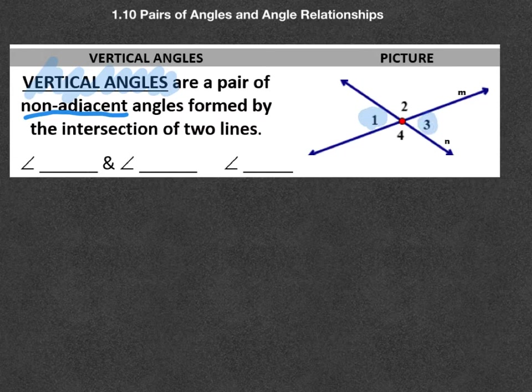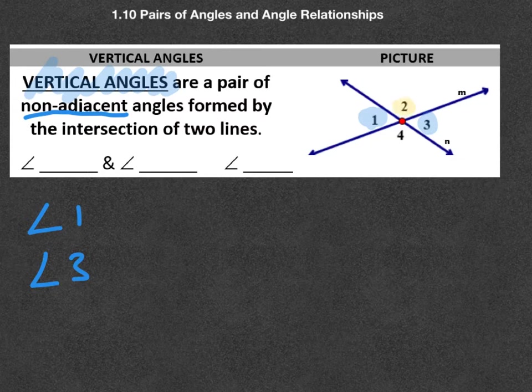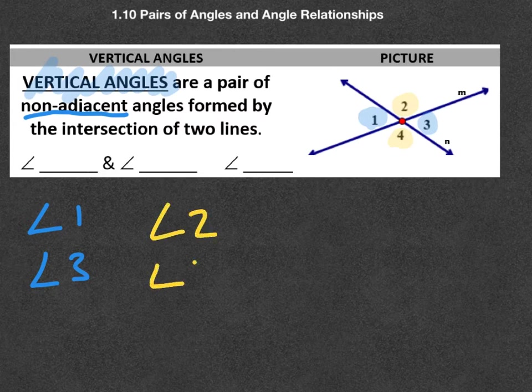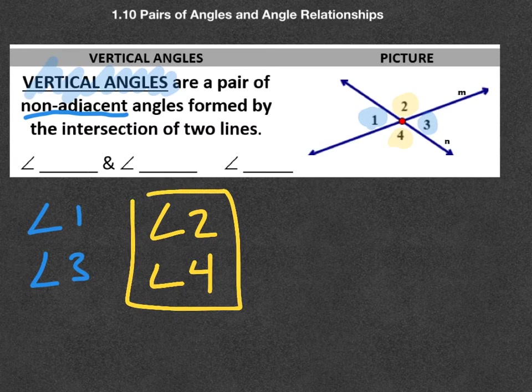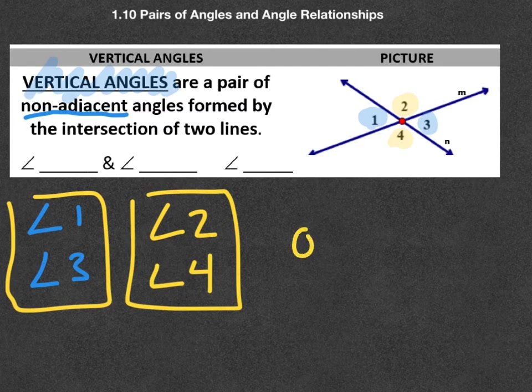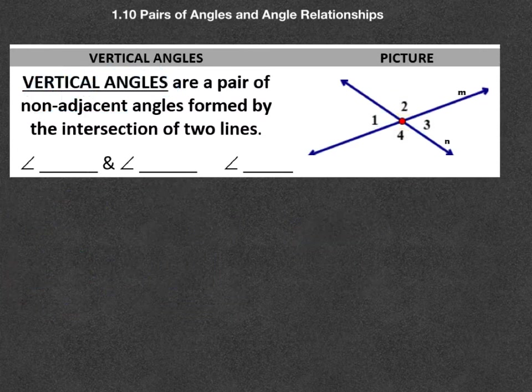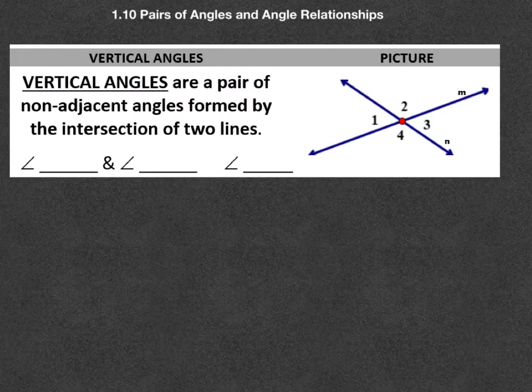So one set of vertical would be one and three. So angles one and three would be known as vertical. Another set would be two and four. These also would be two and four, would also be a vertical set. So we have in this particular diagram, you get two sets. Sometimes they're called opposite angles, and you can see why, because they are kind of opposite each other or on the opposite side of each other.